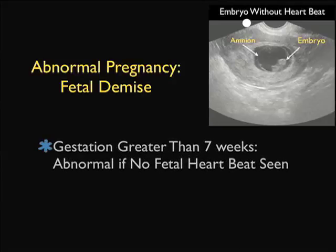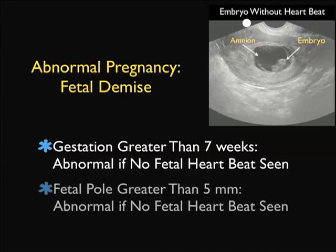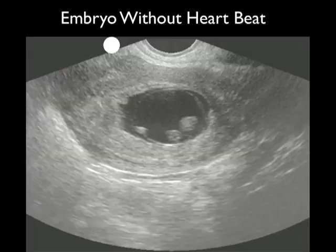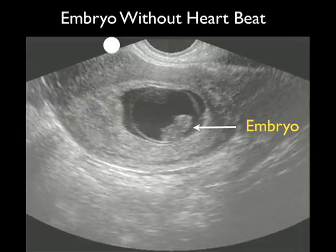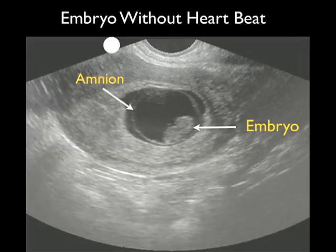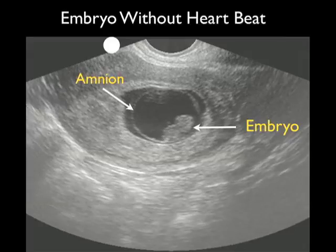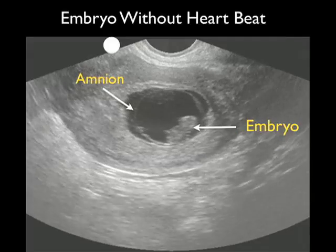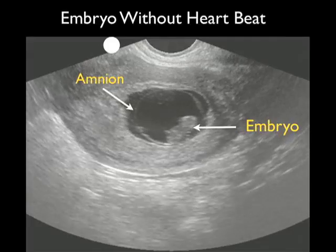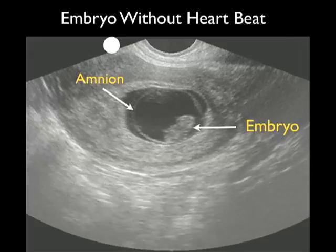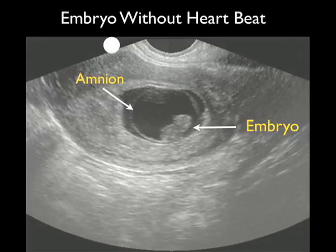Other indicators of an abnormal pregnancy with fetal demise include gestation greater than 7 weeks with no fetal heartbeat, and a fetal pole greater than 5 millimeters without a fetal heartbeat. This was an unfortunate case showing a large fetal pole greater than 5 millimeters without a heartbeat, indicative of embryonic demise, with a large circular amnion visible within the gestational sac. While it's important to pick up findings of an abnormal pregnancy, I always get a confirmatory ultrasound and/or OBGYN consultation before giving the patient the news of fetal demise.